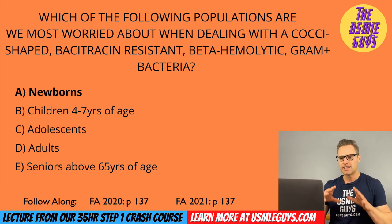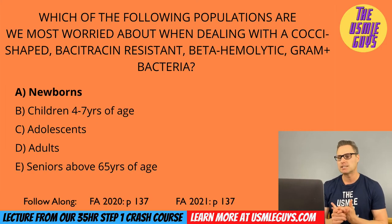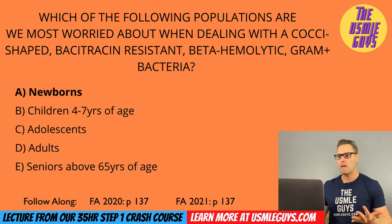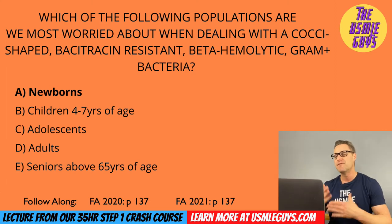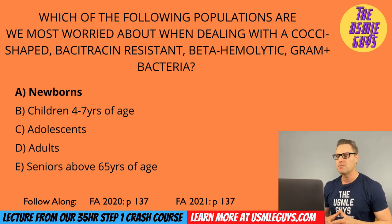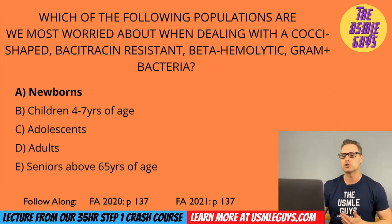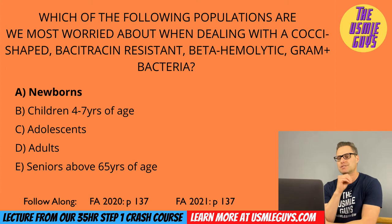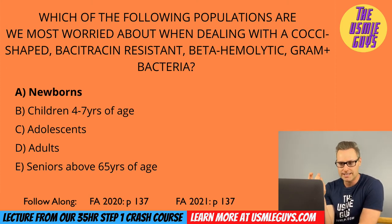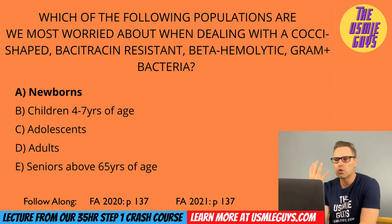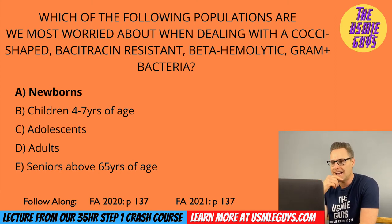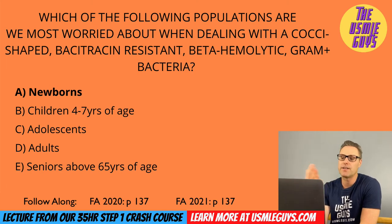The correct answer here is A. Strep agalactiae is a cocci-shaped, bacitracin-resistant, beta-hemolytic bacteria that colonizes the vagina. It can lead to pneumonia and meningitis, and most high yield: it can cause neonatal sepsis. For this reason, we swab the vagina and rectum at 35 to 37 weeks gestation, and if found, we give intrapartum penicillin as prophylaxis. It is hippurate test positive and PYR negative. The hippurate hydrolysis test assesses the bacteria's ability to hydrolyze hippurate into benzoic acid and glycine via the hippuricase enzyme.